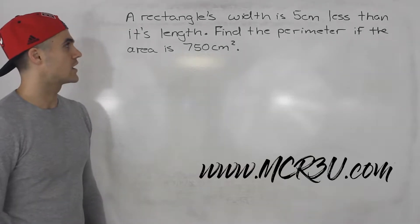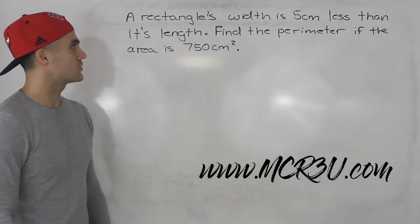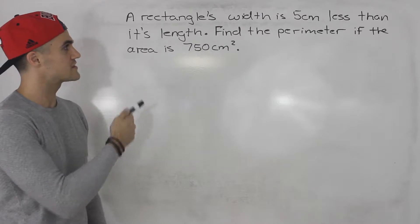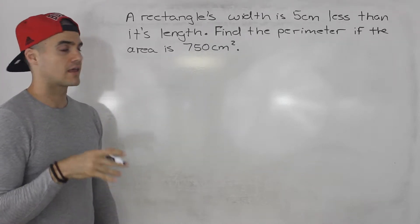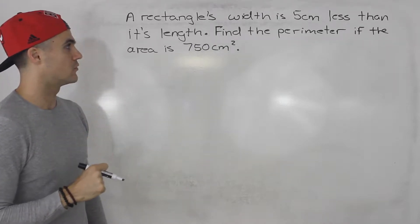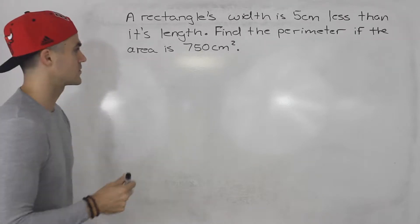Welcome back everybody. Moving on with quadratic equations to a word problem. We're told a rectangle's width is five centimeters less than its length, and we have to find the perimeter of the rectangle if the area is 750 centimeters squared.